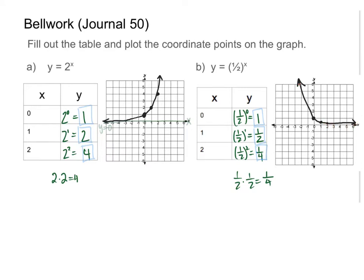As x goes to positive infinity for the y = (1/2)^x graph, it flattens out and heads toward the x-axis, meaning it's heading toward y equals zero. This is the opposite of the 2^x graph — they're like mirror images of each other. The 2^x graph curves upward aggressively and is called a growth, while the (1/2)^x graph declines and flattens out, so we call that a decay.